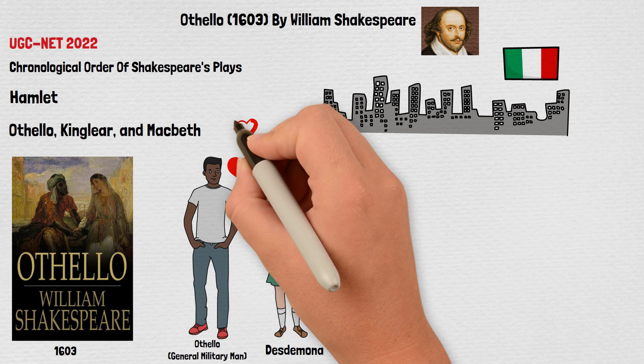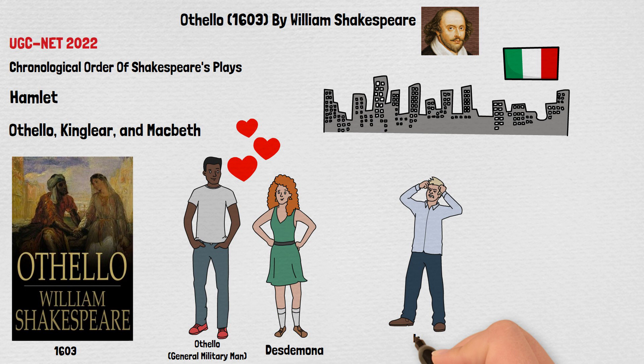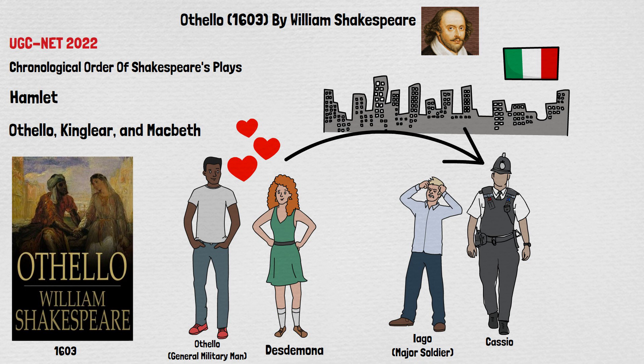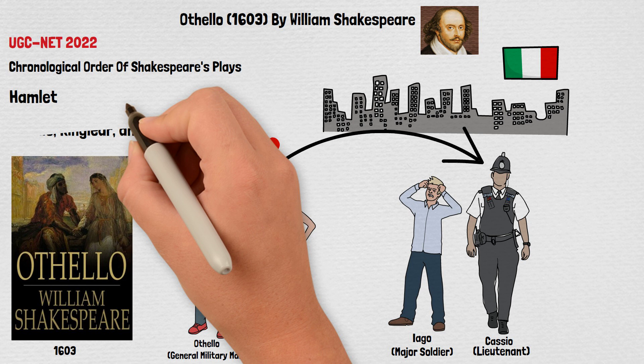We have a villain in this novel named Iago. He is a major soldier in Othello's army. He hates Othello for not promoting him to the rank of Lieutenant but Casio. He is more deserving than Casio but Othello chooses Casio rather than him. He chooses Casio because he is a sincere man. He is loyal and trustworthy.